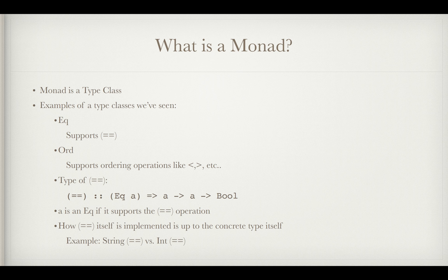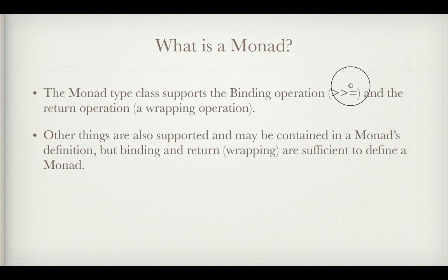So how double equals itself is implemented is really up to the concrete type itself. You can imagine the string double equals is different from int double equals but if we abstract to the type class level we can see that double equals is going to look like this for all of the types that are implemented. So the monad type class supports the binding operation which is this esoteric looking operator greater than greater than equals and the return operation which is essentially a wrapper. Other things are also supported and may be contained in a monad's definition. However, binding and return are necessary and also sufficient to define a monad.